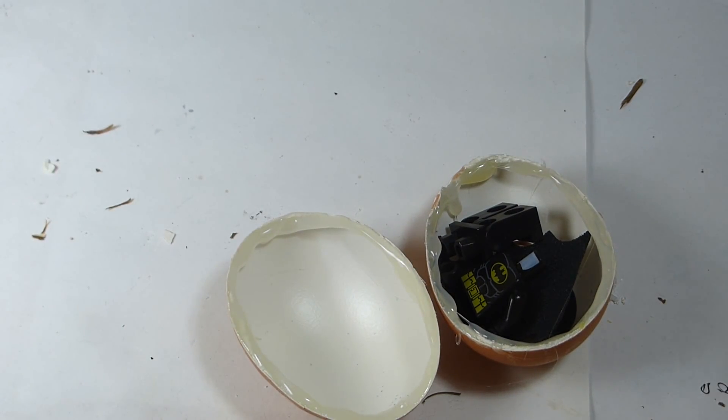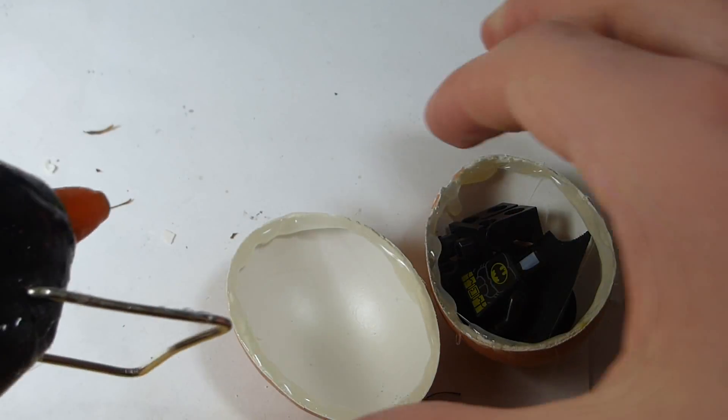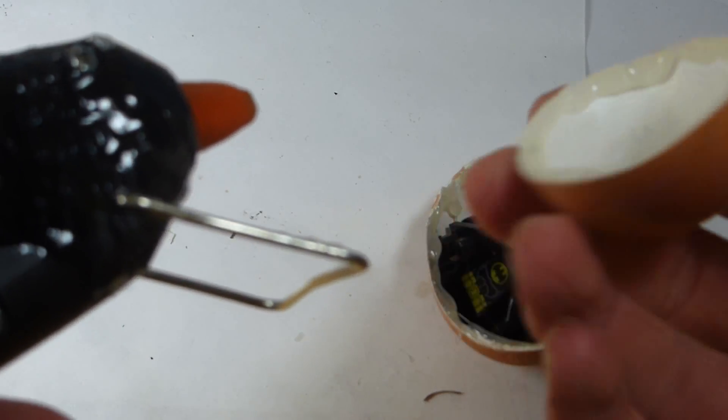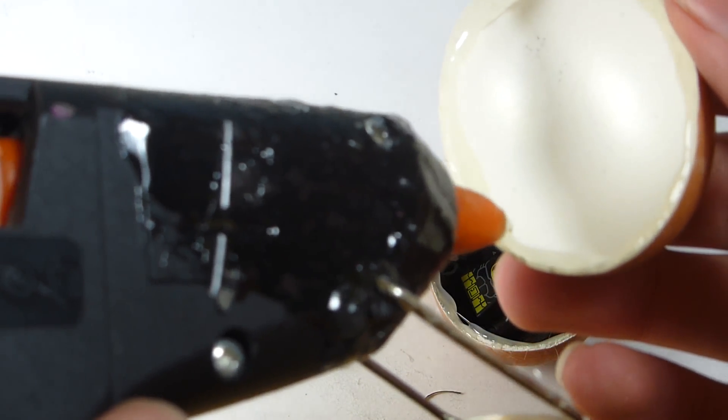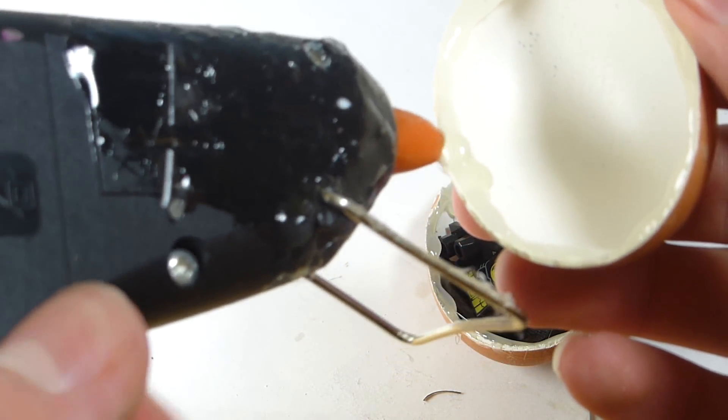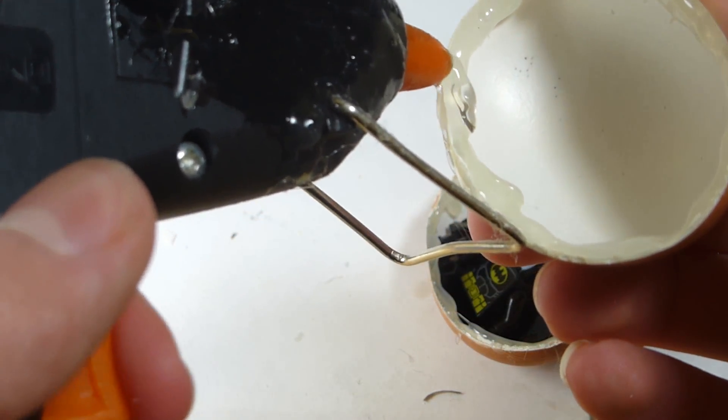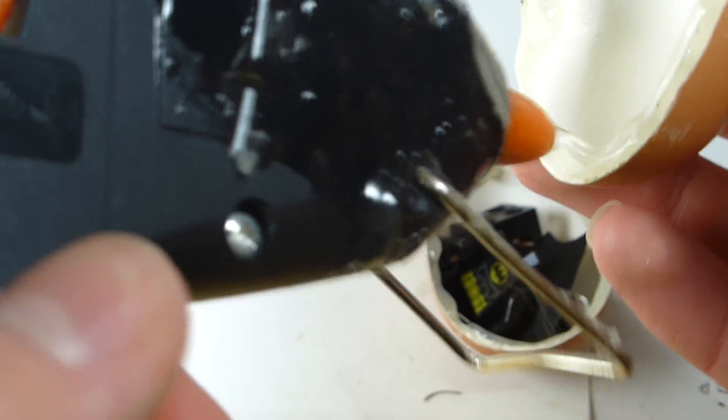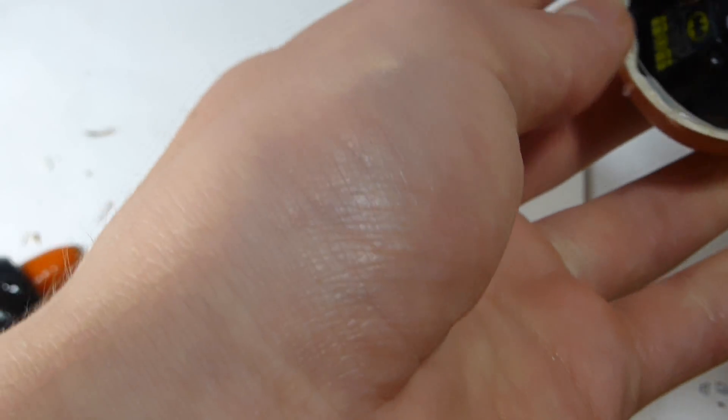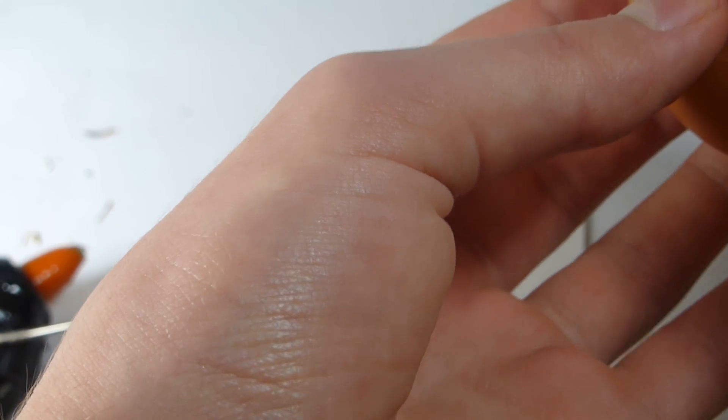And then we're going to take our hot glue gun once again, and on the other half of the eggshell we're going to put a very thick bead of hot glue. So we're going to clean it up once we're done, so just be quick and get that hot glue all around there. And then stick the two halves together as cleanly as you can.